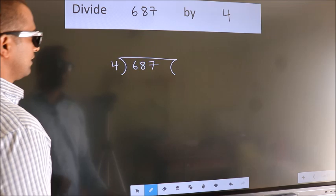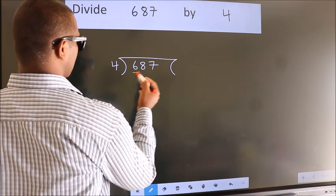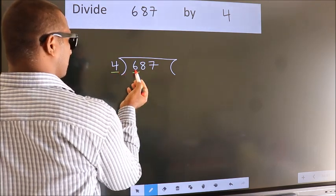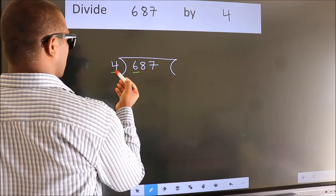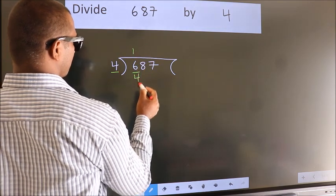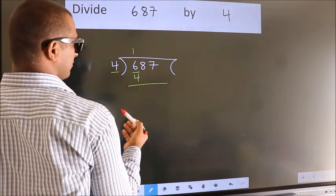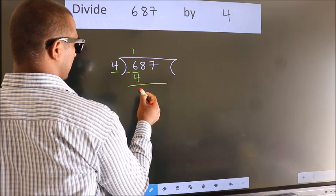Next, here we have 6, here 4. A number close to 6 in the 4 table is 4 once 4. Now, we should subtract. We get 2.